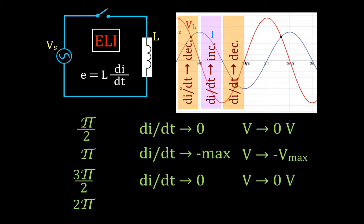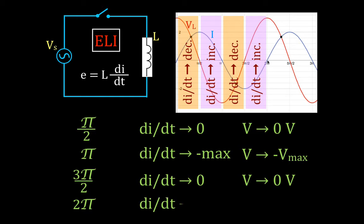Remember: the slope of the current is equal to the voltage. For the last quarter cycle, the rate of change of the current is increasing again. As it comes back to the 0 line it gets steeper, the rate of change increases in the positive direction because the curve has a positive slope there, and therefore we reach our maximum positive voltage. That completes one full cycle, which then repeats itself over time.